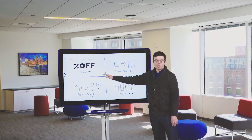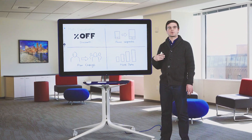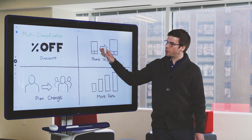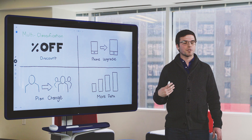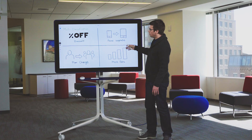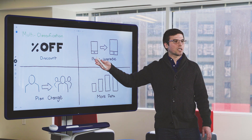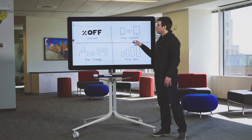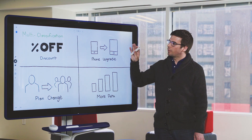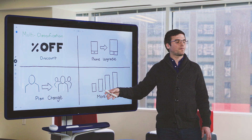Let's look at how a telecommunications company might encounter a multi-class problem. Each month, the telco receives a list of customers that are most likely to churn or cancel their contracts. The telco devises four different offers: a percent off their existing plan, a phone upgrade, a possible plan change, or even more data. They'll use multi-class classification to predict which of these four offers each individual subscriber is most likely to respond to. By avoiding subscriber churn, the telco keeps its revenues and increases the lifetime value of its subscribers.